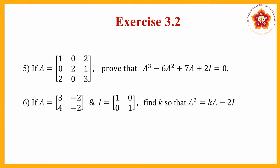The question gives a matrix A of order 3×3, and we have to show the equation A³ - 6A² + 7A + 2I = 0, where capital I represents the identity matrix of order 3×3. The matrix A is given as: row 1: 1, 0, 2; row 2: 0, 2, 1; row 3: 2, 0, 3.